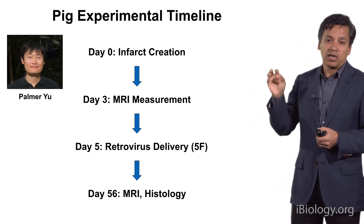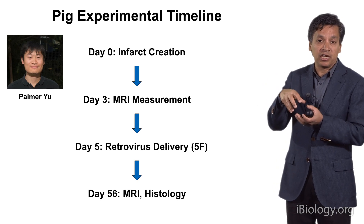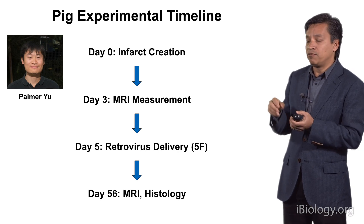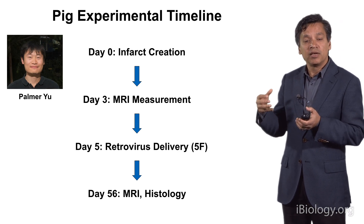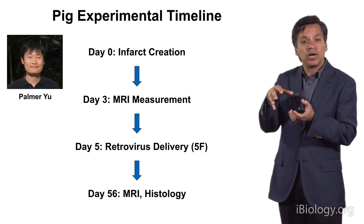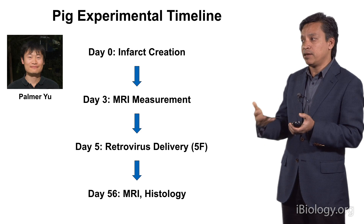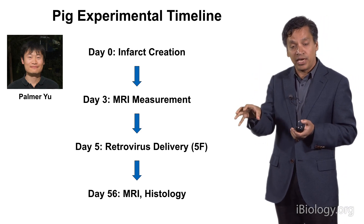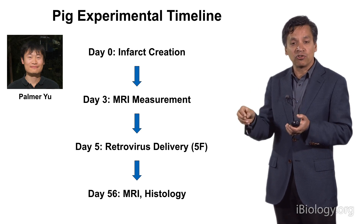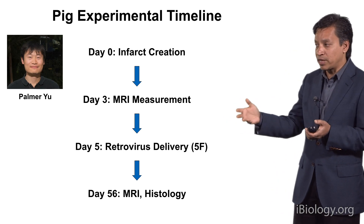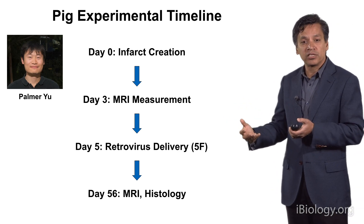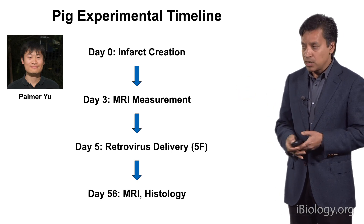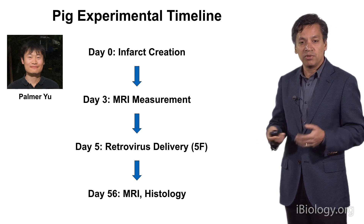We took pigs and inflated a balloon in their left anterior descending artery — the one commonly occluded in humans in an infarct — created a big infarct, waited three days, put these pigs in an MRI machine to determine the degree of cardiac dysfunction, and then two days later treated these pigs with gene therapy using a retrovirus that infects dividing cells — the fibroblasts, not the myocytes — then waited two months, put them back in the machine, and measured if there was any improvement in cardiac function. This was designed to mimic the human condition.